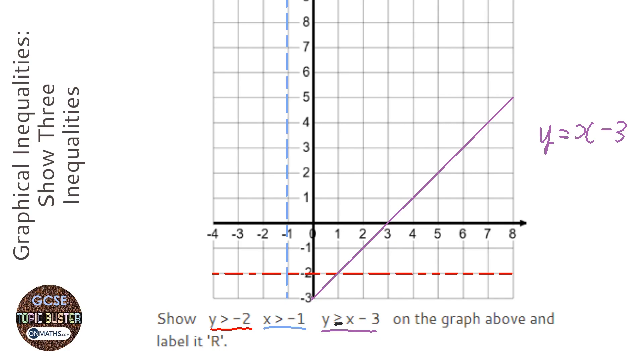Next we need to work out where our region is. It's above this line because it says y is greater than minus 2, it's to the right of this line because it says x is greater than minus 1.